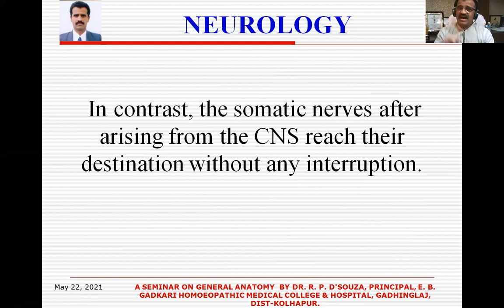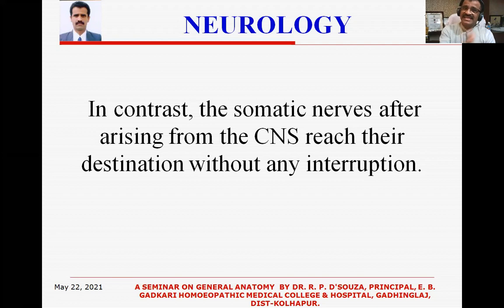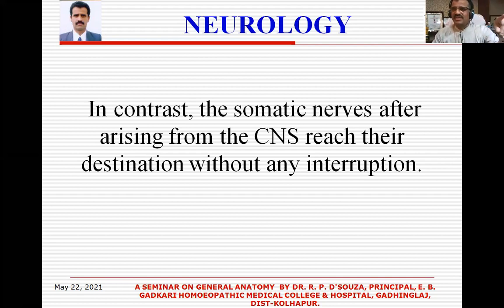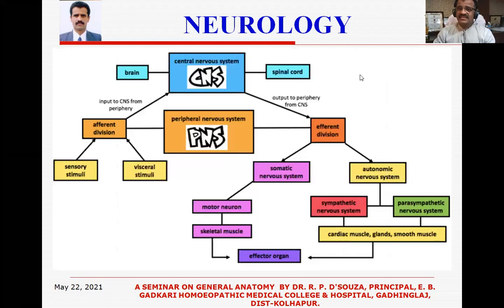Somatic nerves after arising from the CNS reach their destination without any interruption. But in the case of the autonomic nervous system there is an interruption — there is a ganglion — so we call them pre-ganglionic and post-ganglionic fibers. In this schematic representation, the central nervous system consists of the spinal cord and brain. The peripheral nervous system consists of an afferent division and an efferent division, with sensory stimuli and visceral stimuli in the afferent division.